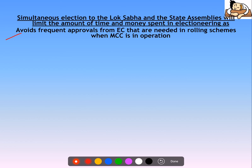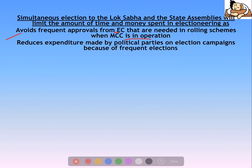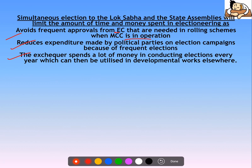Simultaneous elections would mean no frequent approvals needed from the Election Commission. The process becomes streamlined and expenditure is reduced — money spent by political parties on election campaigns decreases since Lok Sabha and state assembly elections currently happen at different times. The exchequer also spends a lot of money conducting elections every year, and that money could instead be utilized in developmental works.